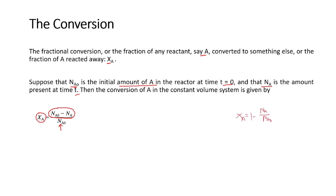Using the distributive law, this becomes 1 - na/na0. Since the volume of the reactor is constant, we can divide both numerator and denominator by v. So xa = 1 - (na/v)/(na0/v). Here na/v is the final concentration ca, and na0/v is the initial concentration ca0, so the conversion expression becomes xa = 1 - ca/ca0.